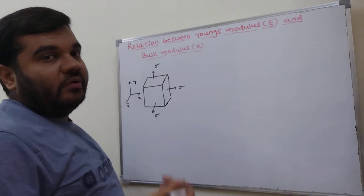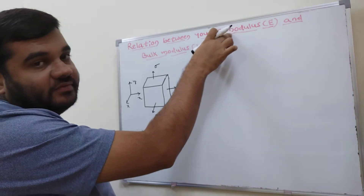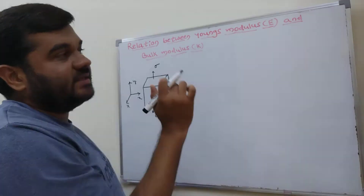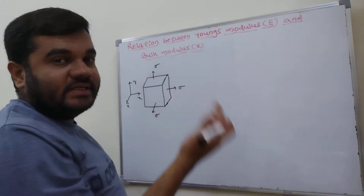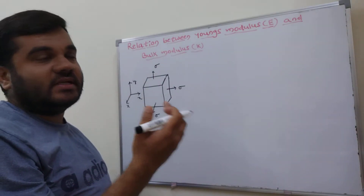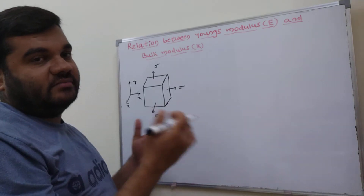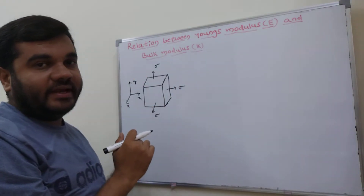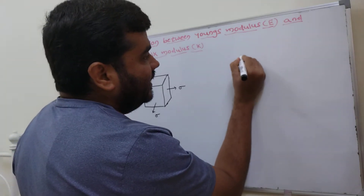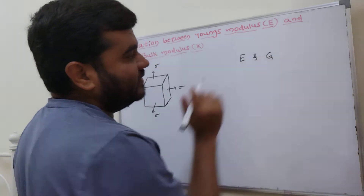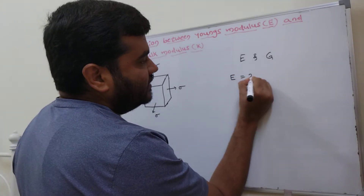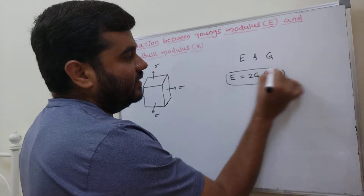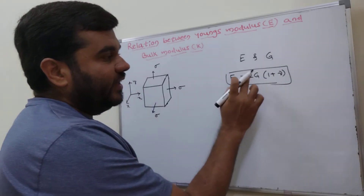In the previous video, we derived the relation between Young's modulus and modulus of rigidity, which is denoted by G. These are all the elastic constants: E, K, G, and the shear strain gamma. In the previous video, we derived E equal to 2 times G into 1 plus nu, where nu is the Poisson's ratio.